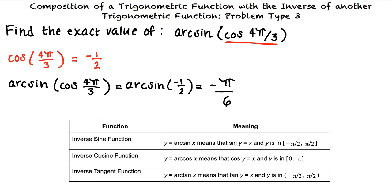Since we are looking for y equals the inverse sine of negative 1/2, we know that we are looking for an angle in the closed set of negative π/2 and π/2, such that the sine of y equals negative 1/2. The only angle in this set that fits this description is negative π/6. Therefore, we can write that the inverse sine of cosine of 4π/3 equals the inverse sine of negative 1/2, which equals negative π/6.